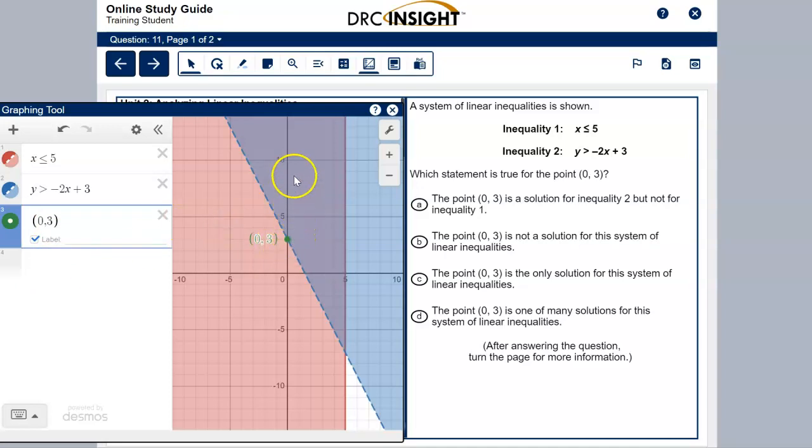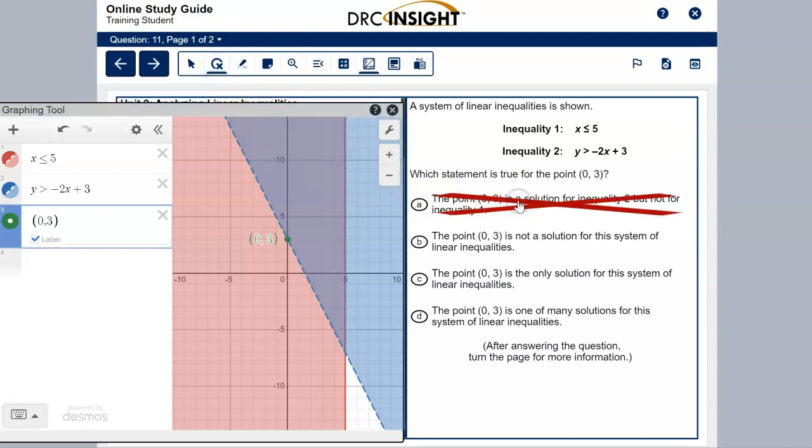Y is greater than negative 2X plus 3. That means the point on the line is where Y is equal to negative 2X plus 3. And we don't want the numbers where the Y is equal to negative 2X plus 3. We want Y to be greater. So it needs to be above this line in this purple region. So let's see which answer choice is saying that. 0-3 is not a solution. So answer choice A says the point 0-3 is a solution for inequality 2. Let's see. Inequality 2, if we turn off the first one, it is not a solution for inequality 2. It says not a solution for inequality 1. Well, it is a solution for inequality 1 because it's in the red part of the graph, which is the first inequality. So that one is definitely wrong. I'm going to choose the answer eliminator up here to cross off this problem.